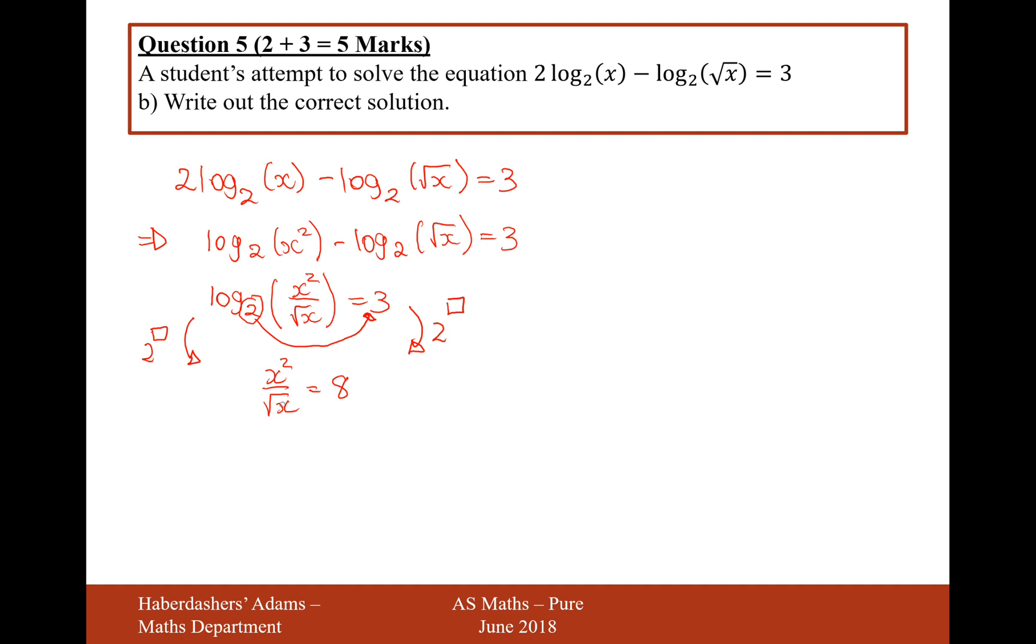Now I'm going to simplify this algebra on the left-hand side. That's going to be x squared divided by x to the half. So you subtract the indices there. It's going to be x to the power of 3 over 2 equals 8.